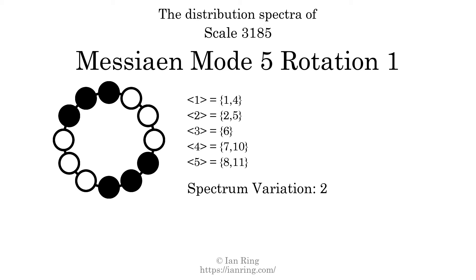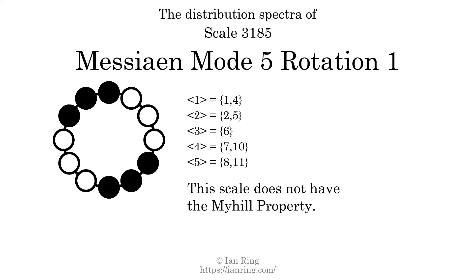Since the variation is greater than 0, this indicates that the scale is not perfectly even. The highest spectrum width is 3. Since this is greater than 1, we know that this scale is not maximally even. If every spectrum has exactly 2 specific intervals, we call that the Myhill property. This scale does not have the Myhill property. Since the generic interval ranges overlap, this scale is an improper scale.